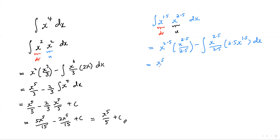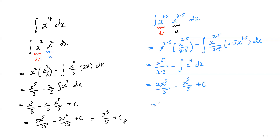So this is x to the power of 5 divided by 2.5, minus the integral of x to the power of 4 dx. Since 2.5 is 5 over 2, this becomes 2x⁵ over 5, minus the integral of x to the power of 4, which is x to the power of 5 over 5. And yes, we get x to the power of 5 over 5 again. So this is how we can use integration by parts even in a question as simple as that.